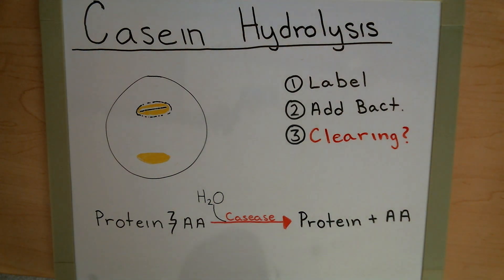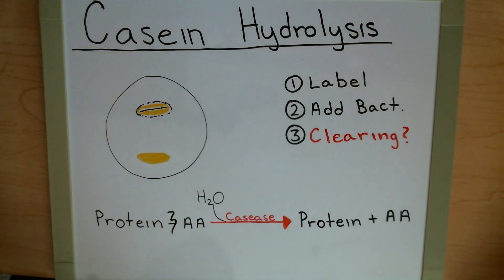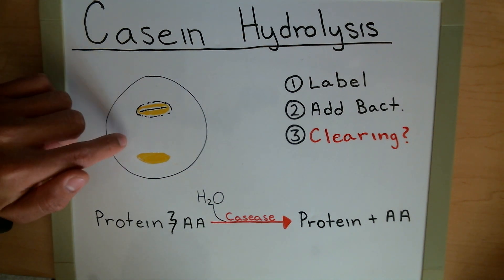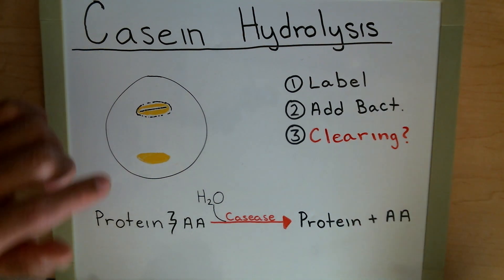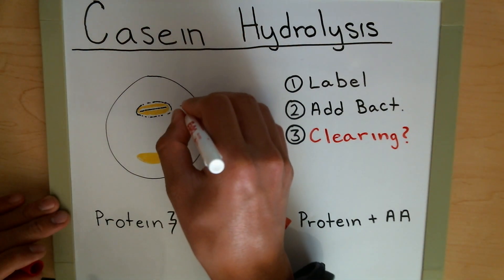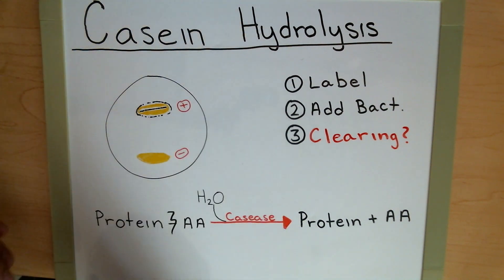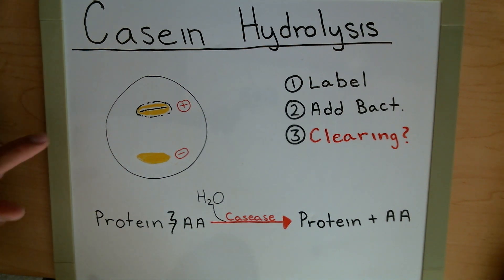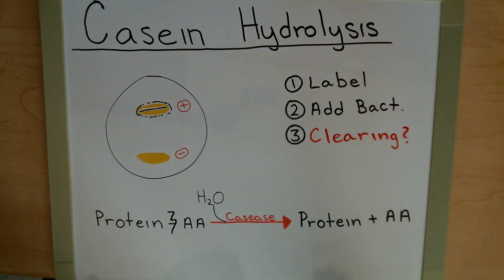When I did this lab, the bacteria with a clearing also appeared a little bit darker than the one with a negative result that does not have a clearing. So the top one is our positive result and the bottom one is our negative result. We're just looking for that clearing or a little haziness around the edge — something that gives it a little extra pop beyond just the growth of the bacteria itself.